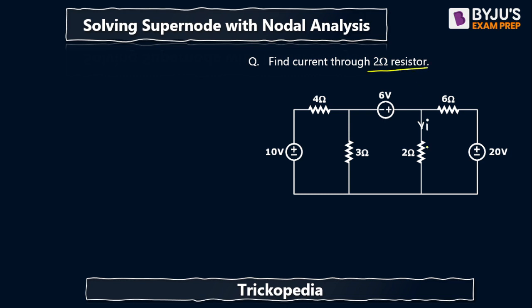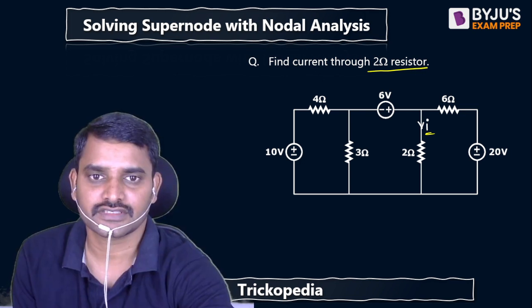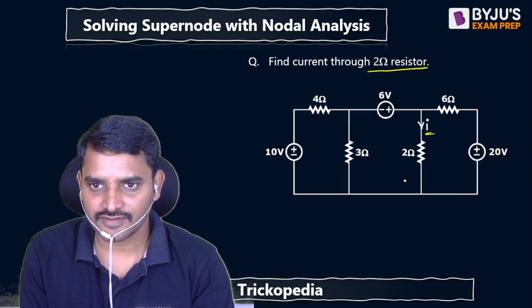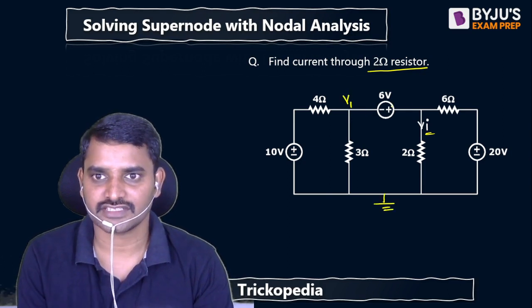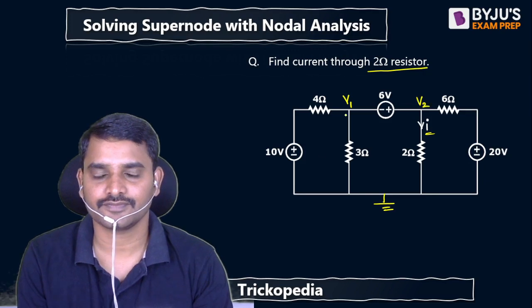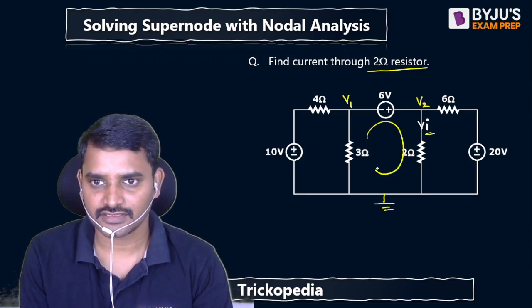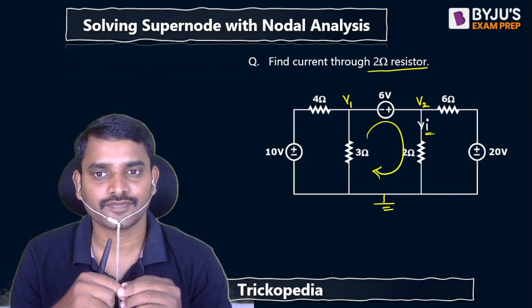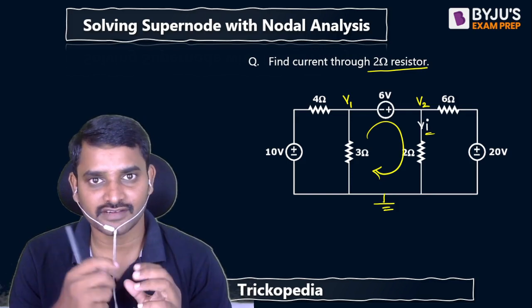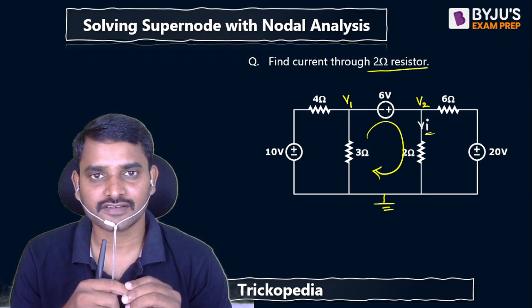This is the current we need to calculate. So generally what we will do is first we will assume ground, then we will assign the node voltages v1 and v2, and then we will write KVL equation at the supernode so you will get one equation. After that we will write nodal equation by shorting the voltage source.